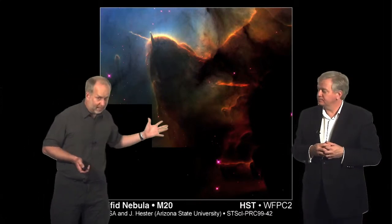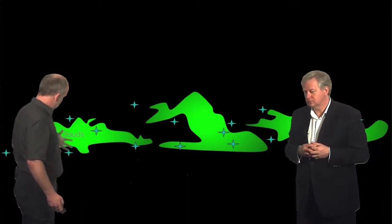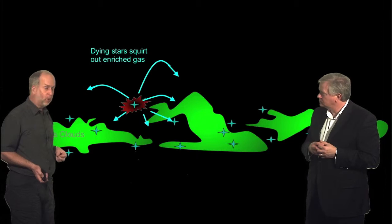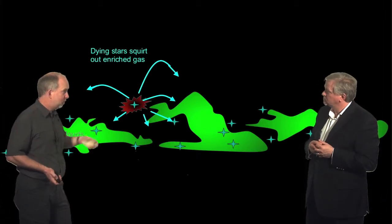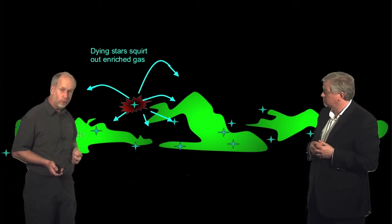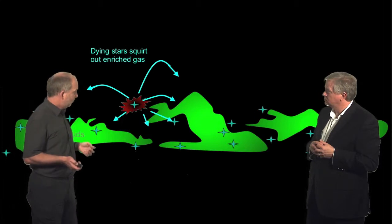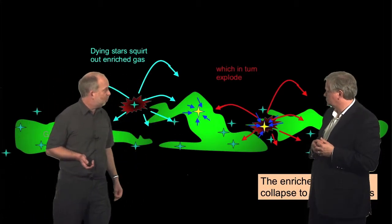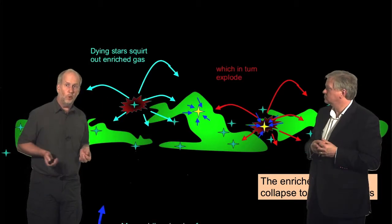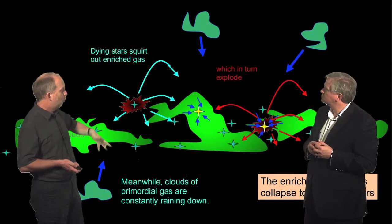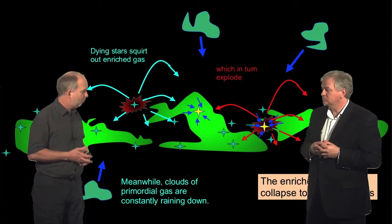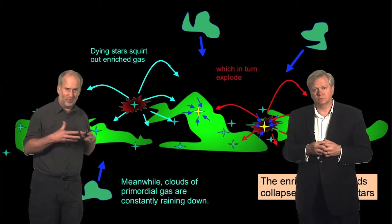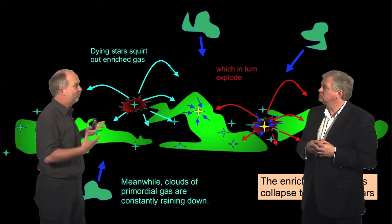Where do these giant molecular clouds come from? Well, you get gas and stars. Some of the stars explode. As they explode, they squirt out enriched gas, as we talked about in the first Light in the Universe lesson. This gas coalesces to form another generation of stars. Some of these in turn explode, squirting out yet more gas. All the time you've got clouds of primordial gas left over from the Big Bang raining down. So giant molecular clouds are sort of like the scum that forms from all these different processes coming on.